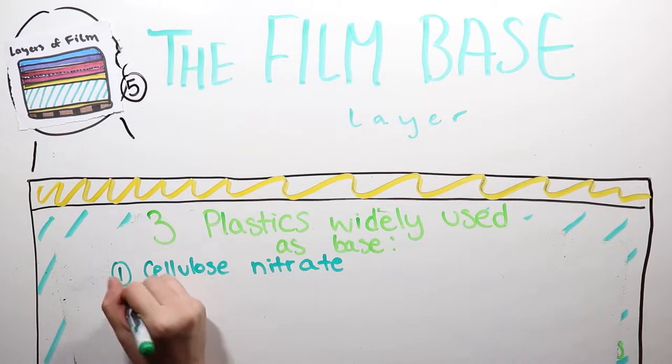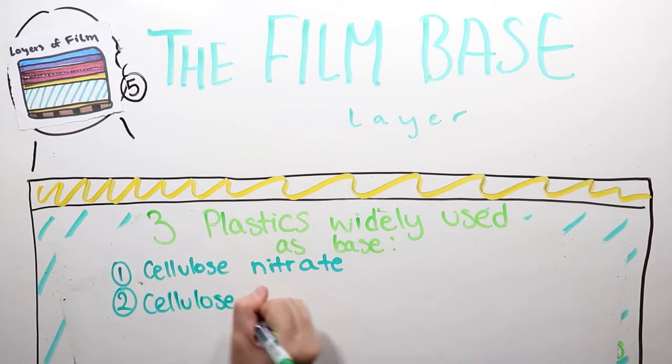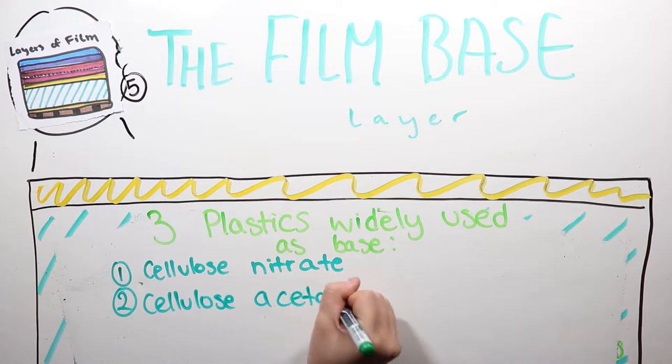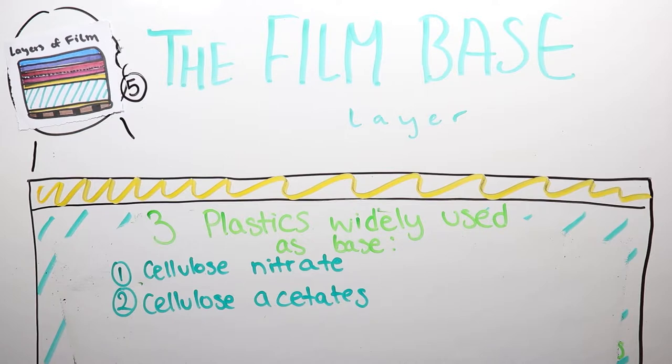Cellulose acetates were developed to replace nitrate. Cellulose triacetate, called safety base, is much safer to use and store than nitrate.